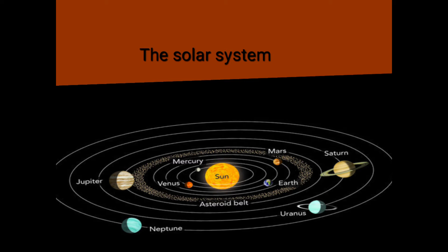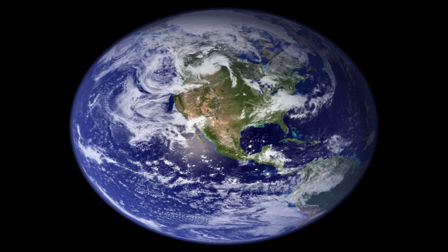So children, today we are going to learn about the heavenly bodies of the solar system. Our earth is a planet — planet means a heavenly body that does not twinkle. It gets its light from the sun.